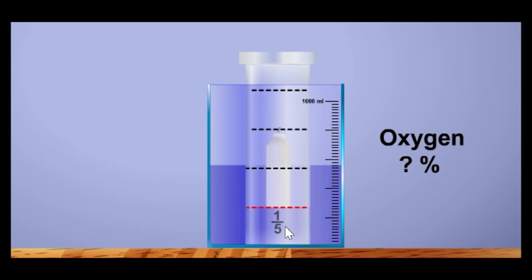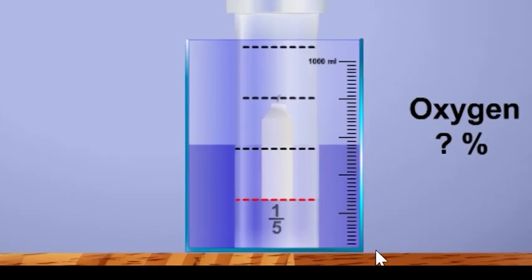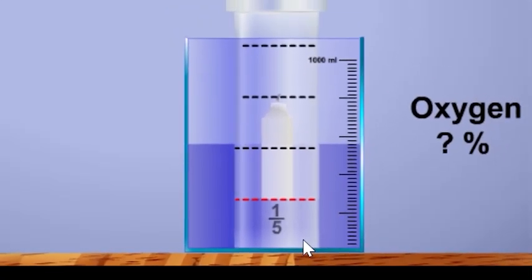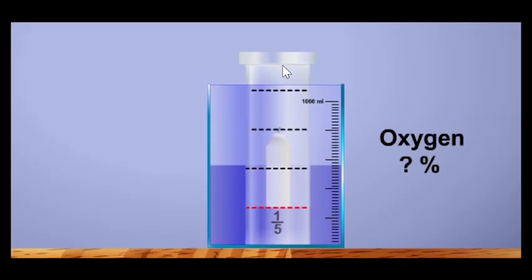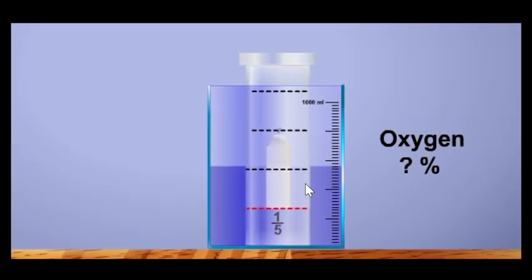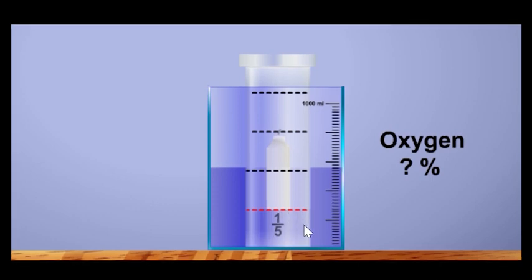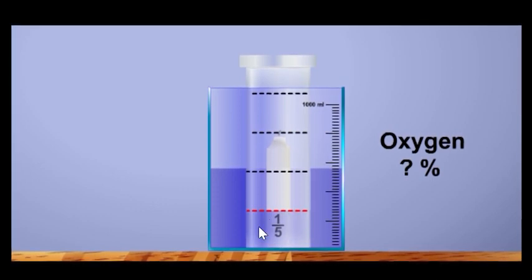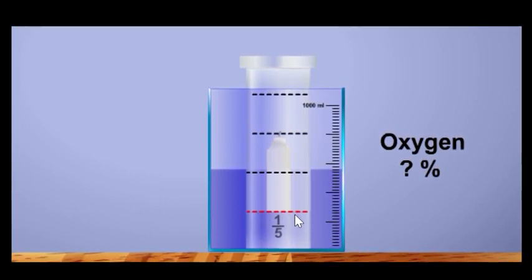The rise of water level in the gas jar shows that one-fifth of the air is used up in the burning. The air used up is oxygen, as only oxygen is required for burning. The water level rises to one-fifth of the gas jar and not to the whole gas jar. This is because only oxygen is used up during combustion, and oxygen takes up around one-fifth of the air.